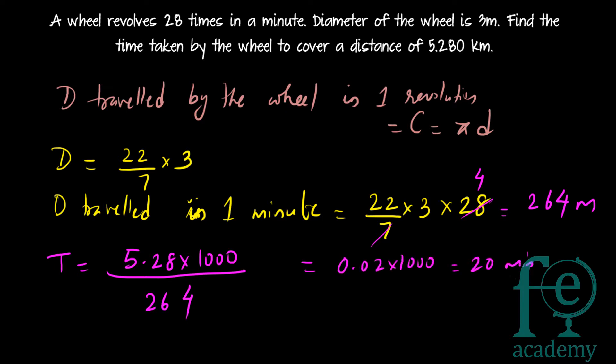So it takes 20 minutes to cover a distance of 5.28 kilometers. For all these kinds of questions, the only concept required is that the distance traveled by a circular wheel in one revolution equals the circumference of the wheel, using the formula 2πr or πd, where r is the radius and d is the diameter. Thank you for watching.